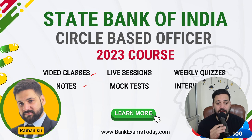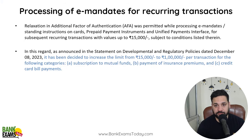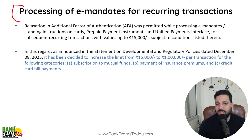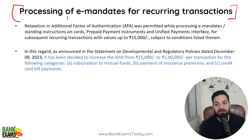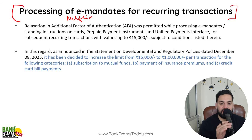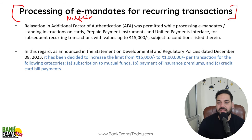First and most important news from last week: the limit has been increased for processing of e-mandates for recurring transactions. For example, you might be making payments for Netflix on your mobile or TV. You enter your OTP once, and next month the payment is cut automatically. That is e-mandate for recurring transactions.